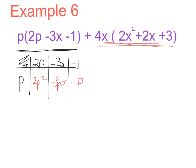Now I'm going to work out the second bit over here, which is plus 4x bracket 2x squared plus 2x plus 3. So again we lay it out. Along the side I'm going to write 4x. Along the top 2x squared plus 2x plus 3.